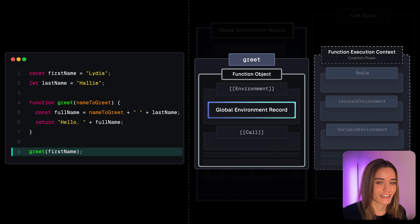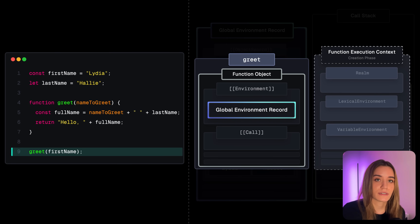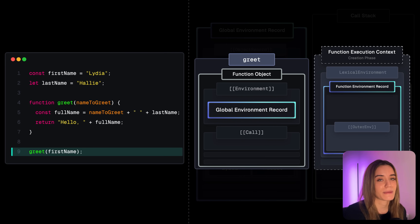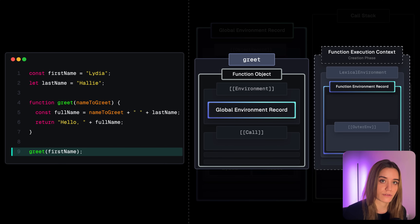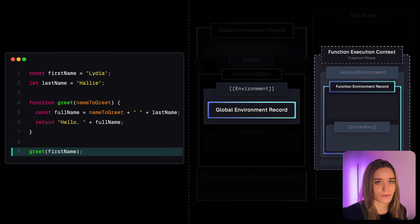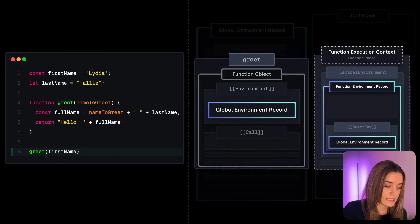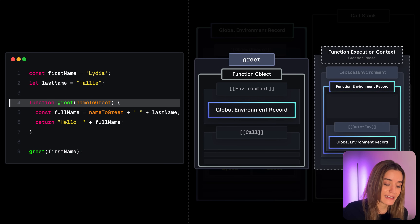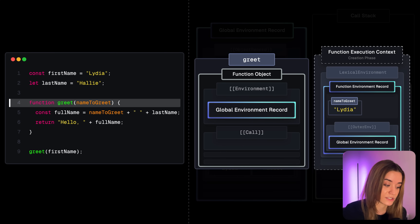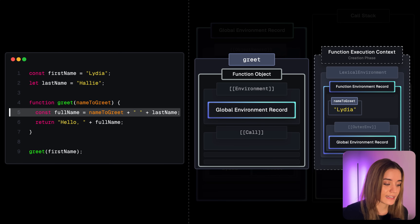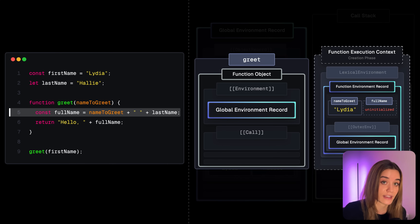When greet is invoked, the call method on the function object creates a new function execution context, which again goes through creation and execution phases. In the creation phase, the lexical environment contains a brand new function environment record managing identifier bindings for parameters, variables, and function declarations within this function. It also has an outer env property pointing to the global environment record. Parameters are immediately added and initialized — in this case, nameToGreet is initialized with 'Lydia'. The fullName variable with const is added but remains uninitialized until the execution phase.